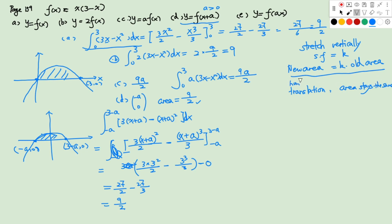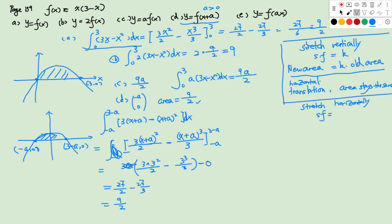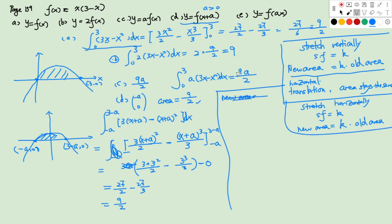For part e, y = f(ax). This is a horizontal stretch with scale factor 1/a. The point (3, 0) maps to (3/a, 0). If a > 1, the area shrinks. We guess the new area = (1/a) × (9/2) = 9/(2a).